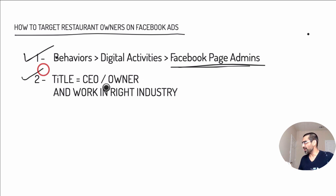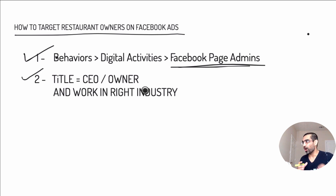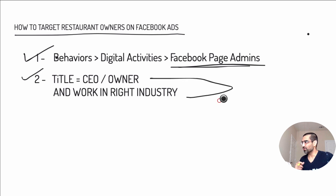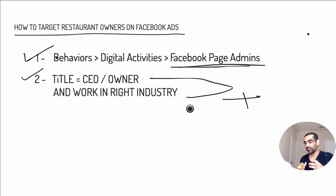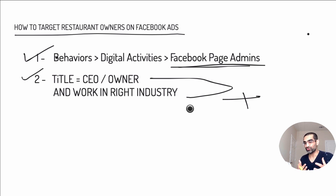Option number two is you can also use a combination of different targeting options. For example, you can target someone who is an owner and also works in a restaurant or food industry, because someone who is an owner and works in that industry is likely to be a restaurant owner that you're trying to reach with your Facebook ads.